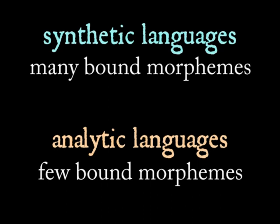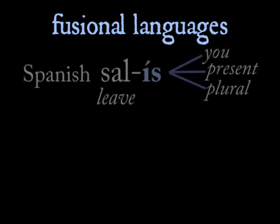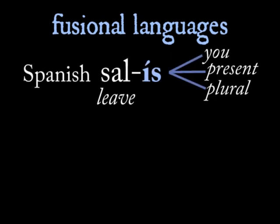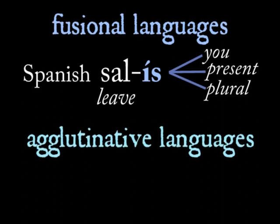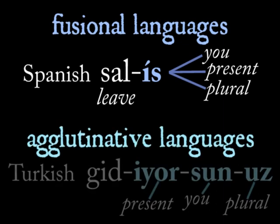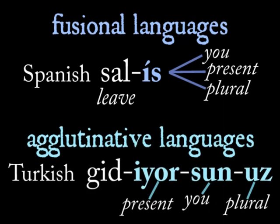Types of synthetic languages that use bound morphemes include fusional languages, which are rarer and fuse grammatical information into inflectional affixes. They tend to have more meaning packed into fewer affixes. Agglutinative languages, by contrast, tend to have more affixes but less overlap between grammatical meanings in each individual affix.